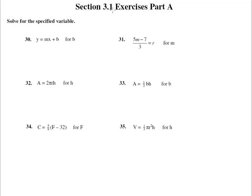Here we are in section 3.1 exercises part A with the answers to number 30 through 37. We'll pick up those last two prep problems as well. We're solving for the specified variable — getting something alone, but it's not always x.